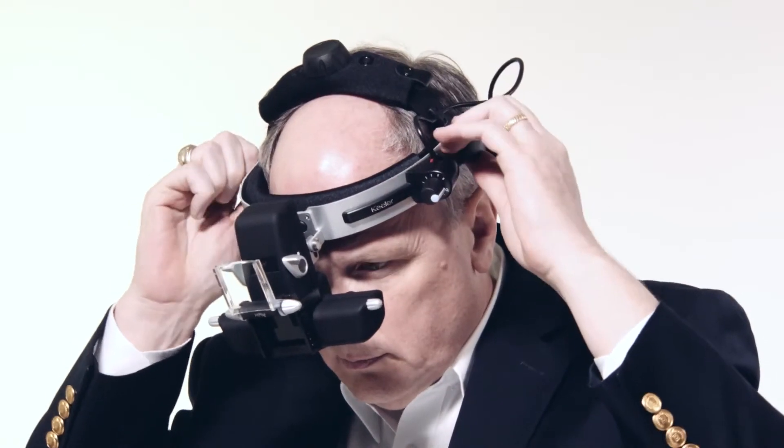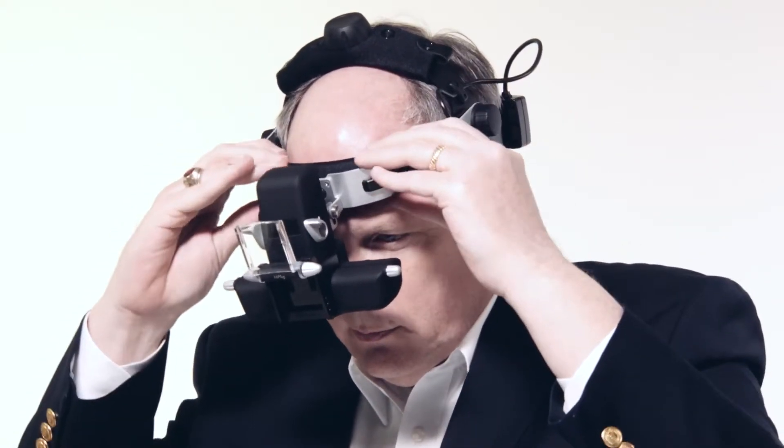For vertical alignment, adjust the metal brow bar by loosening the tension knobs on the side of the headset.